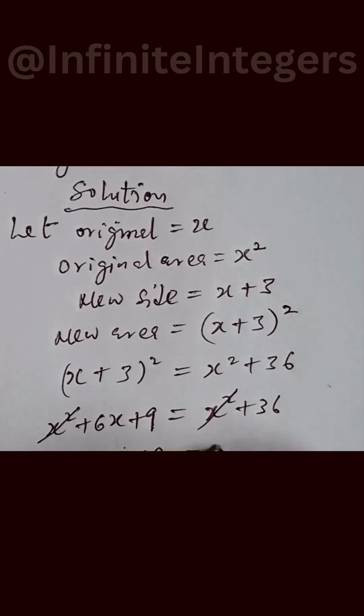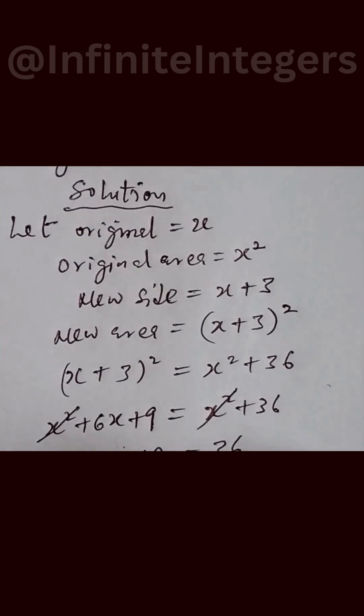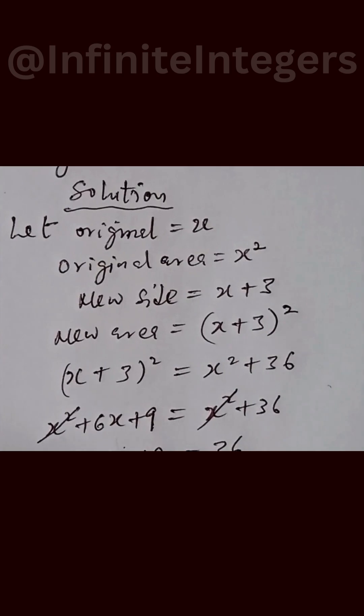And that gives us, we move this 9 here, we have 6x equals 36 minus 9 which is 27.